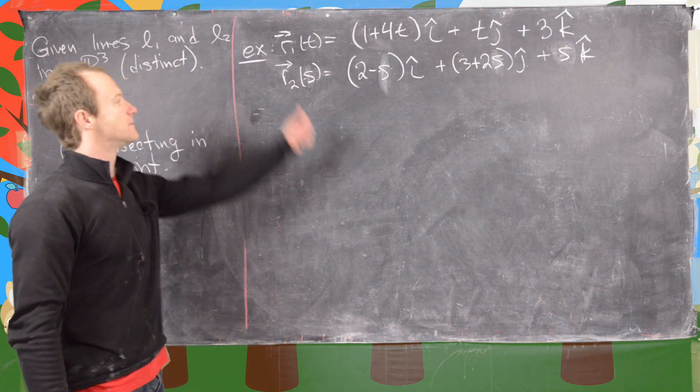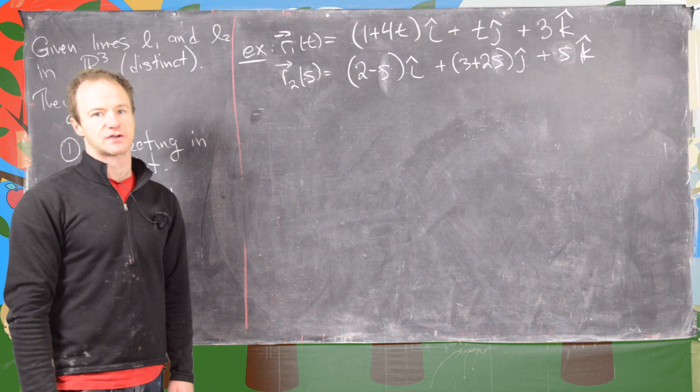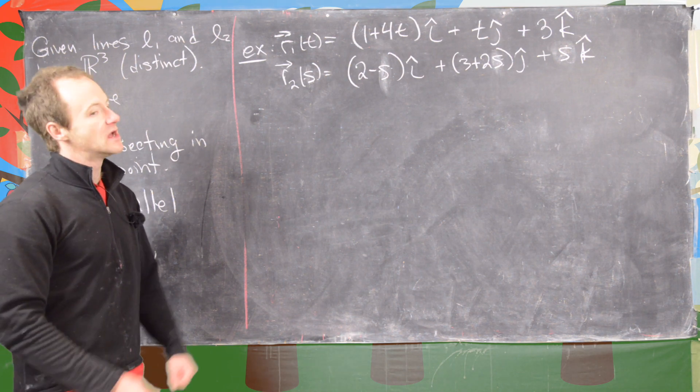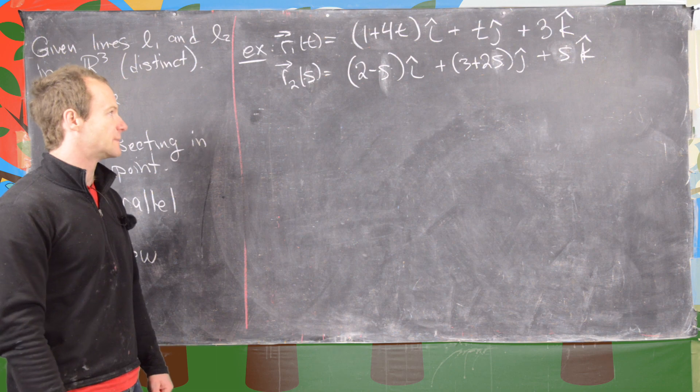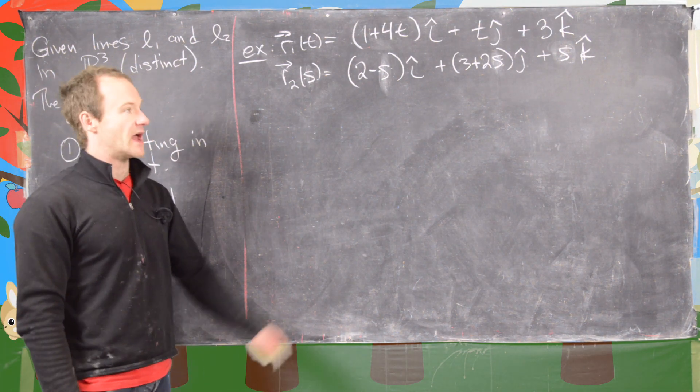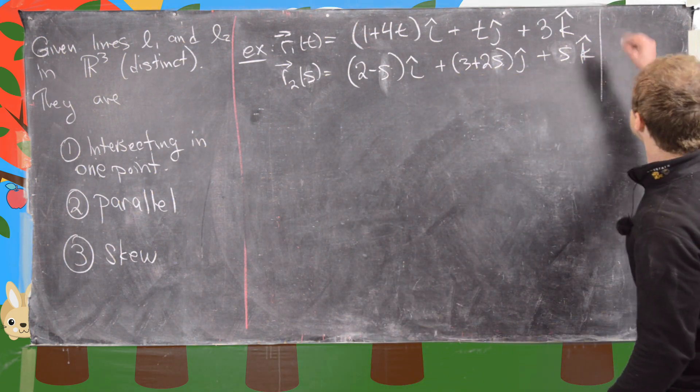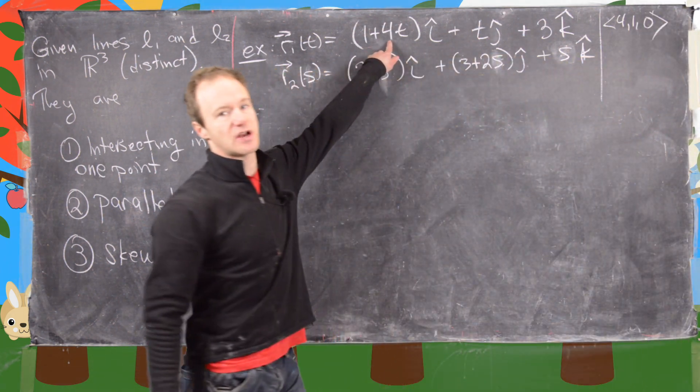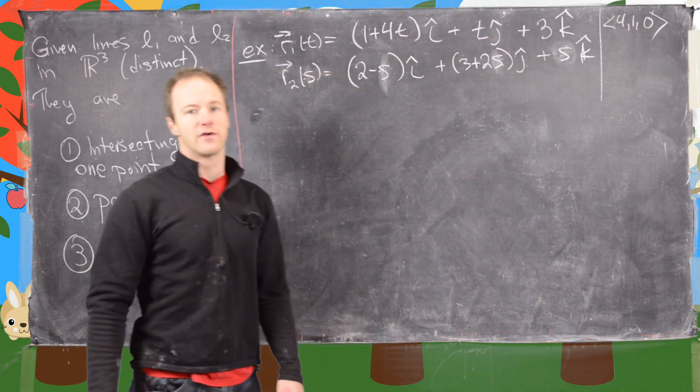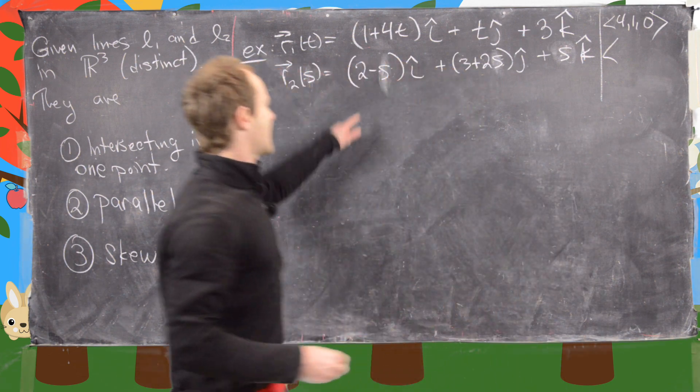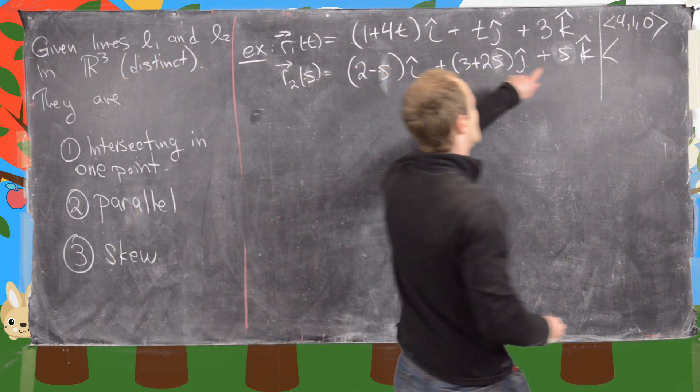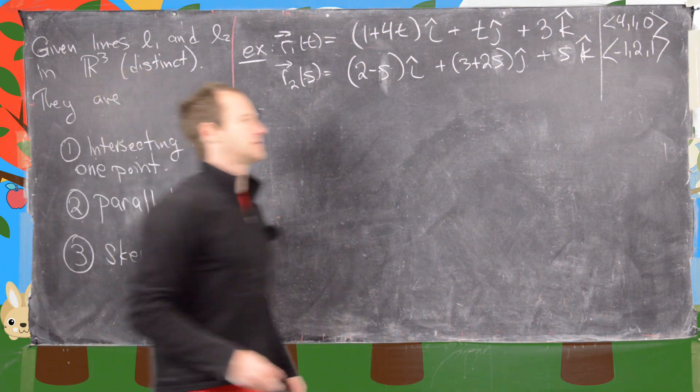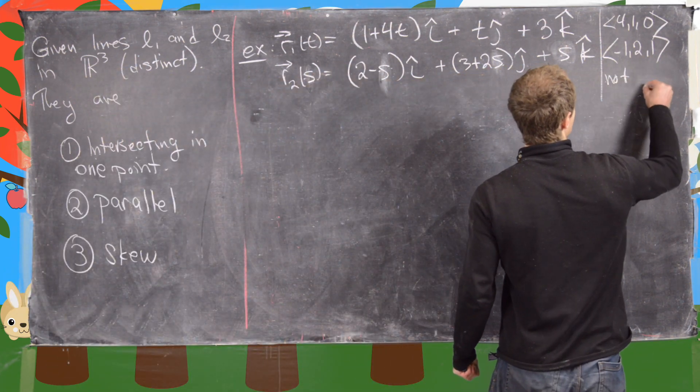Now we're ready for our last example. I've written the equation of two lines using another notation, using the standard basis vectors i, j, and k. That's the same thing as the component vectors, just a slightly different way of writing it. The vector defining this first line is given by (4, 1, 0), and the vector defining the second line is (-1, 2, 1). So we can immediately see that these guys are not parallel.